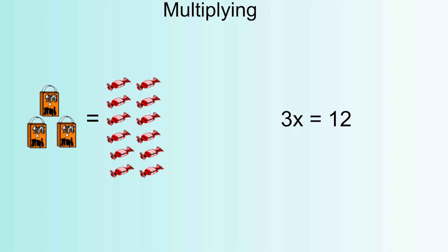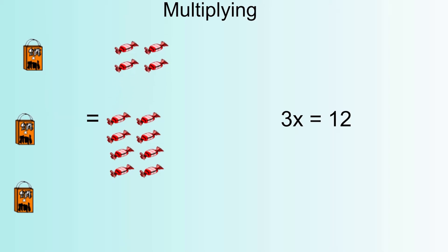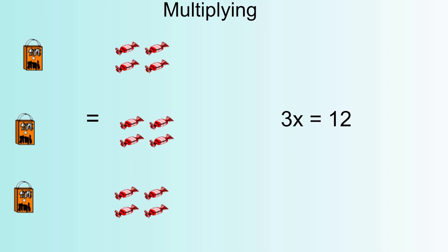We want to know how much is in each bag, and the way we would normally do that is to split the sweets equally amongst the three bags. We've got 12 sweets altogether and we've got to split them equally, so the word split means divide — we're going to divide by three. Each bag gets four sweets, and we can see that three times four is 12, so that makes sense. Mathematically, because it's 3x, we divide by 3. This undoes the multiplication, giving us x equals 4.